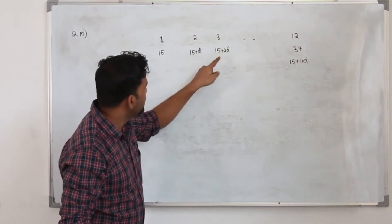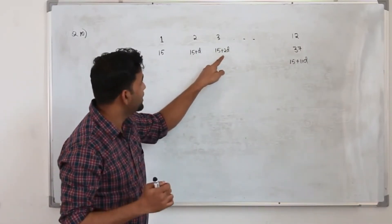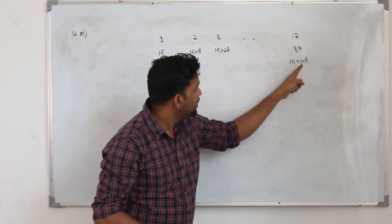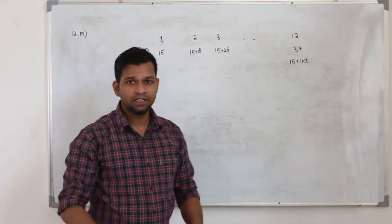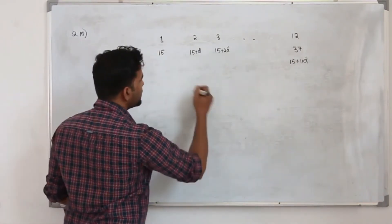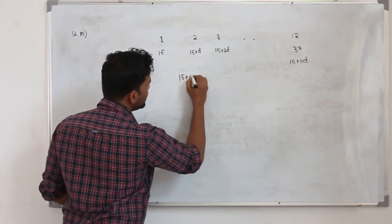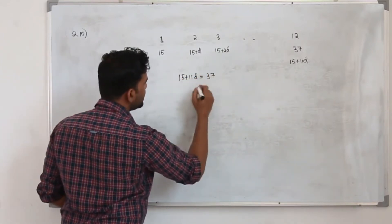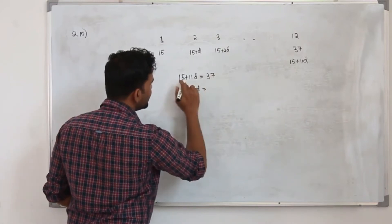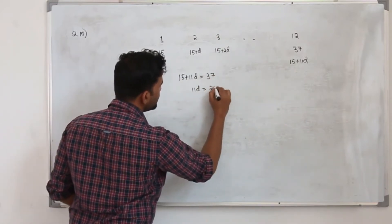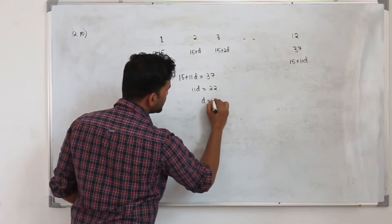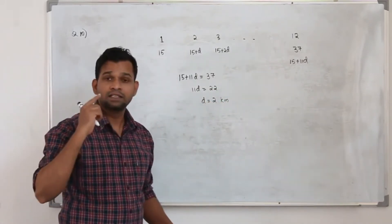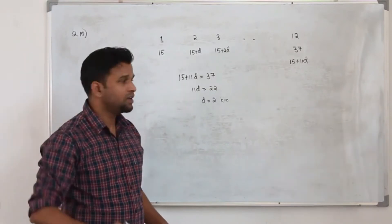In week 3 he covers 15 plus 2D, week 4 is 3D, week 5 is 4D, and week 12 is 15 plus 11D. So we can find the common difference: 15 plus 11D equals 37, so 11D equals 22, giving D equals 2 km. That means he is gradually increasing by 2 km every Sunday.